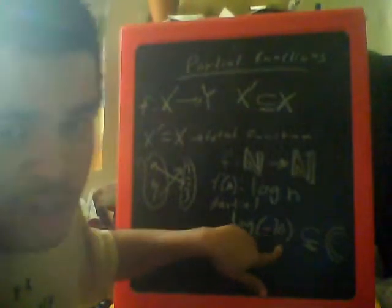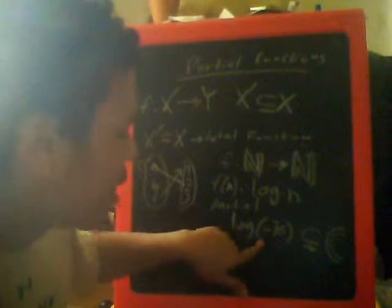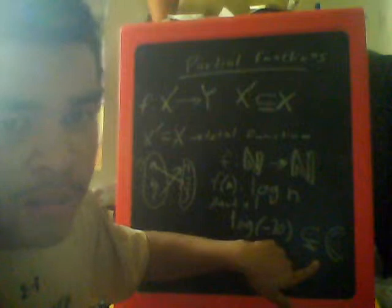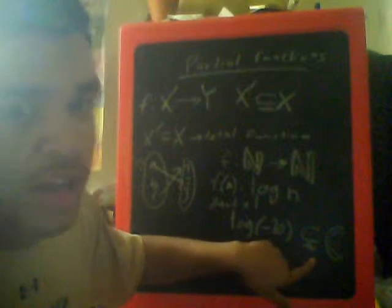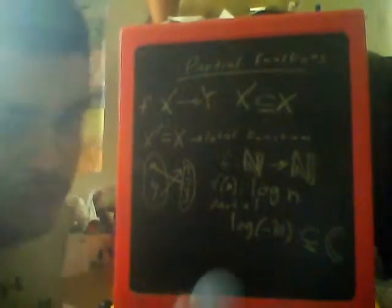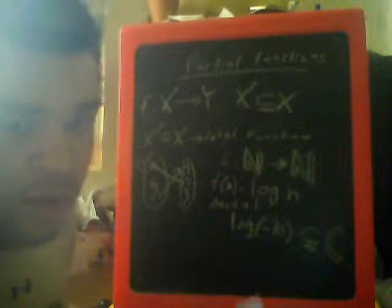Again, it's complex. There's an imaginary part to it. So, you're going to say that a log of negative 10 is part of the complex set. So, this is how you can technically use set theory to study some other math concepts, number theory, and lots of others.